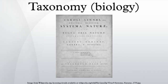William Bertram Turrill introduced the term alpha taxonomy in a series of papers published in 1935 and 1937, in which he discussed the philosophy and possible future directions of the discipline of taxonomy.